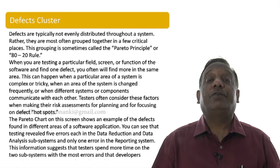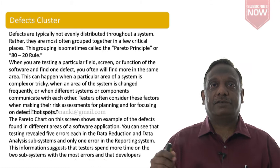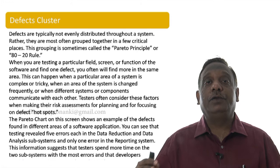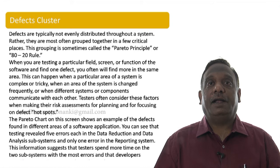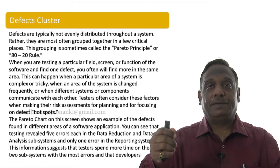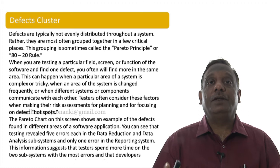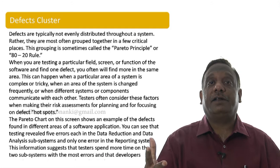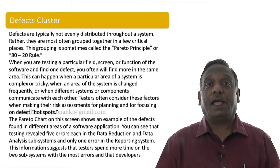Now let's move to the fourth testing principle. The fourth testing principle says that defects in software tend to occur in clusters — they don't occur uniformly. In other words, if you have a software with five modules and after testing you found 500 defects, the defects don't occur evenly across all modules. Instead, defects tend to occur in clusters, where a few modules contain most of the defects.